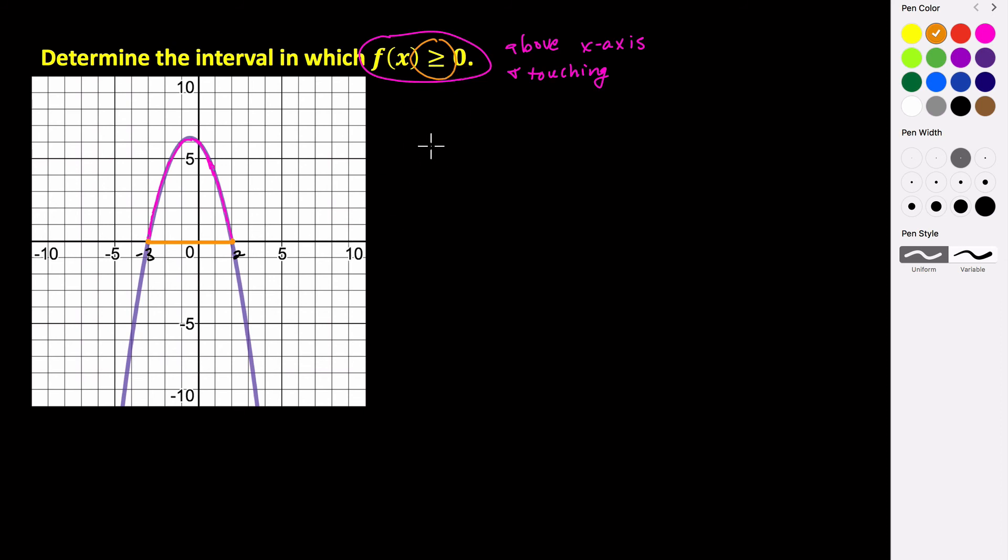So if we're going to write the solution set, it's going to be the set of all x such that x is in between negative 3 and 2. So negative 3 is less than or equal to x is less than or equal to 2. And again, we use the or equal to because this is a greater than or equal to function. So this is our set notation.